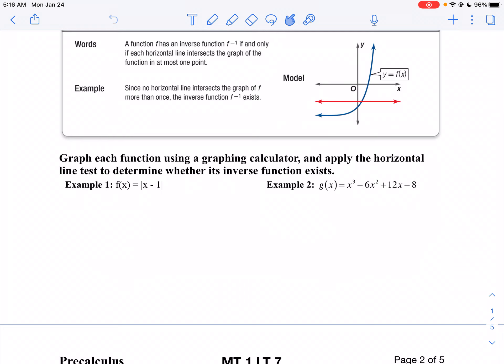So let's take a look at example one. I'm going to graph the function using a graphing calculator. Then I'm going to apply the horizontal line test to determine whether the function exists. So we're just going to start off here by seeing even if the function exists.